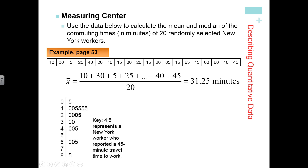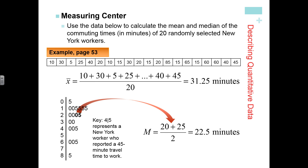Now, if I wanted to find the median, I would list out my data in order. It's nice to do a stem-and-leaf plot to order it and make it easy to see. Once you get it in order, you find your middle value. Because 20 is an even number, we have two middle values: 20 and 25. We add those up and divide by 2 to get our median of 22.5.